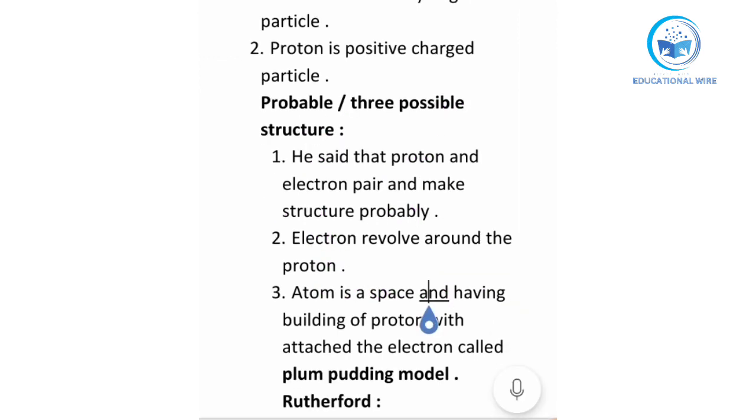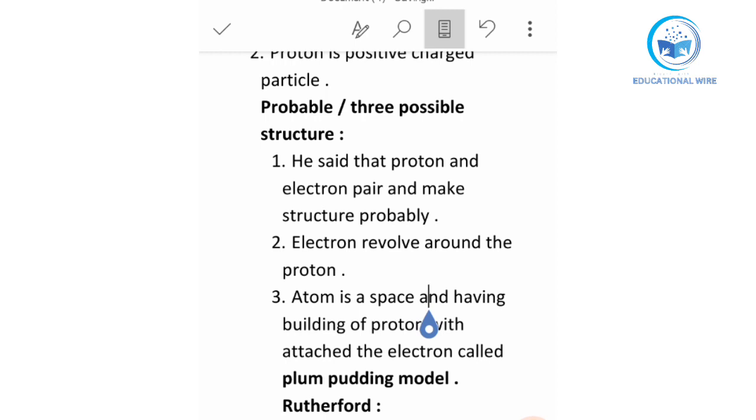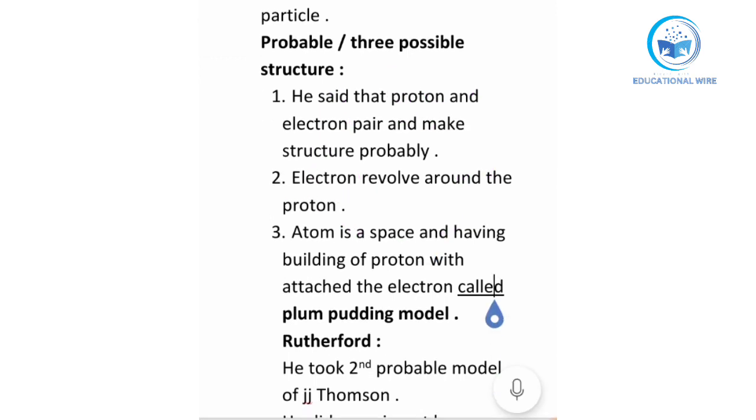After that, third one he said that atom is a space and having building of proton with attached electrons, called plum pudding model. In plum pudding model, he said that we are having an atom in which we are having positive charge proton, and these are the electrons. These electrons are just attached with the protons.